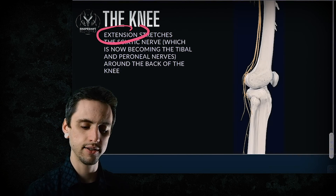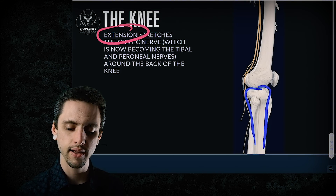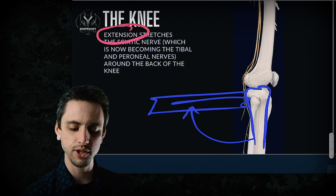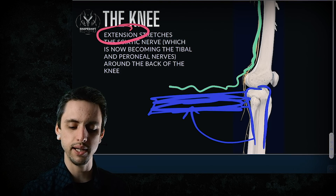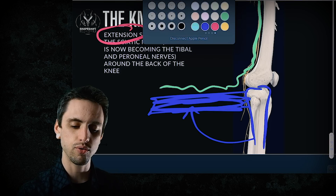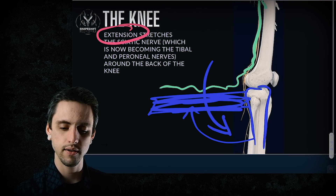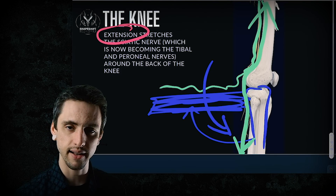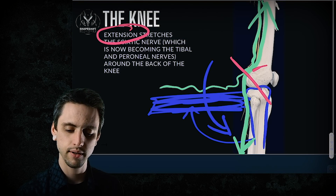Knee extension compresses the sciatic nerve. If we take the knee back into a bent position, the nerves can be relaxed. But when you straighten the leg, the nerves get taut — they wrap around and have to go down, getting stretched up and down. You see compression on the back of the knee.